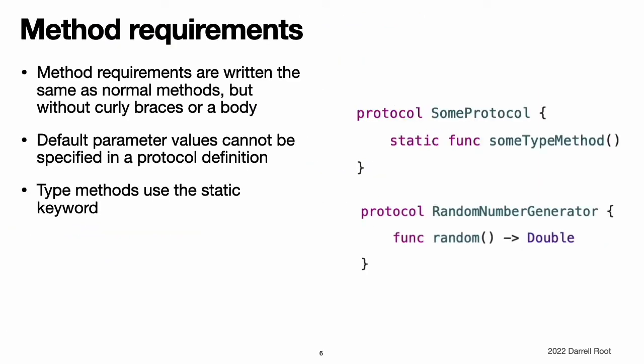Method requirements. Protocols can require specific instance methods and type methods to be implemented by conforming types. These methods are written as part of the protocol's definition in exactly the same way as for normal instance and type methods, but without curly braces or a method body. Variadic parameters are allowed, subject to the same rules as for normal methods. Default values, however, cannot be specified for method parameters within a protocol's definition. As with type property requirements, you always prefix type method requirements with the static keyword when they are defined in a protocol, even though type method requirements can be prefixed with the class or static keyword when implemented by a class.